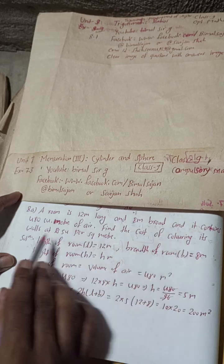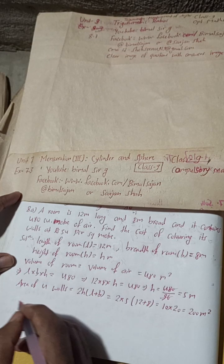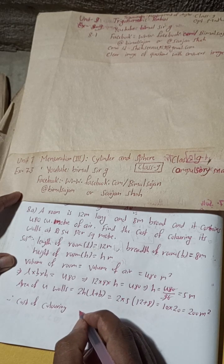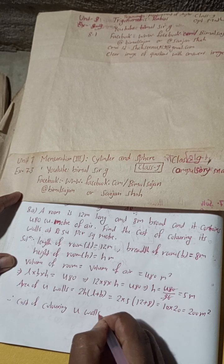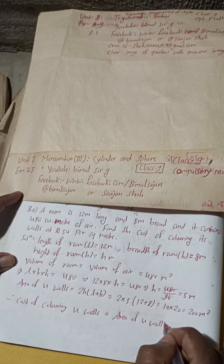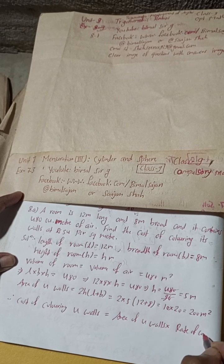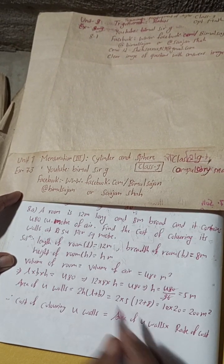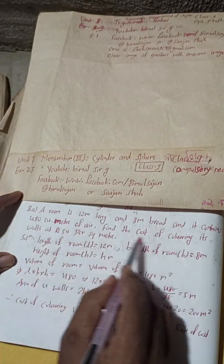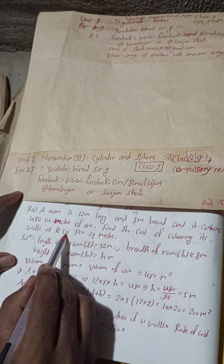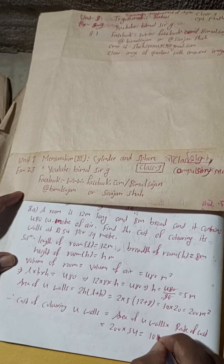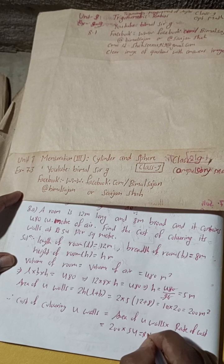Now we find the cost of coloring the four walls. Cost of coloring four walls equals area of four walls into rate of cost. The rate is Rs 54 per square meter. So: 200 into 54 equals Rs 10,800. That is the answer.